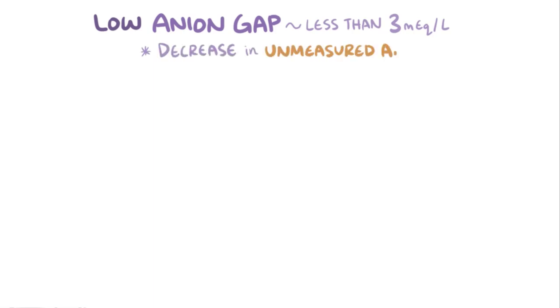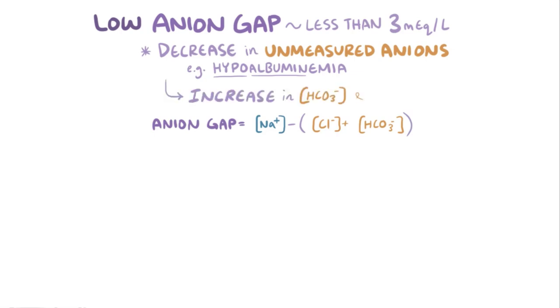In rare cases, the plasma anion gap can be lower than normal as well, which is typically defined by less than 3 milliequivalents per liter. This can be caused by a decrease in the concentration of unmeasured anions, for example due to hypoalbuminemia, or decreased plasma concentration of albumin. To prevent the overall negative charge of the plasma from decreasing, the bicarbonate and chloride concentrations will rise, which means that the anion gap will fall.